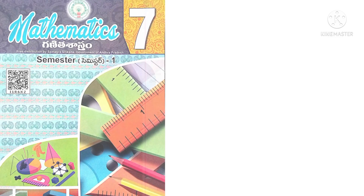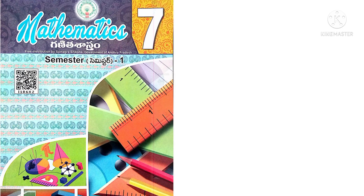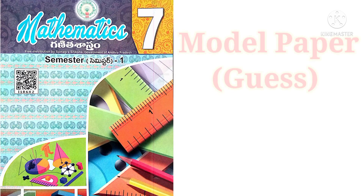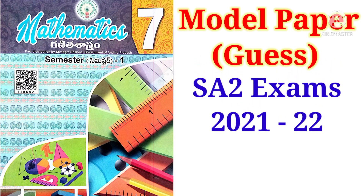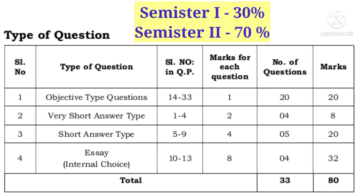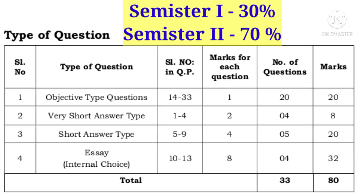Welcome to Shaker Maths. Today we are going to learn 7th class Mathematics Model Paper or Guess Paper for the forthcoming SA2 examinations for the academic year 2021-22. Before going to see the model paper, let us observe that the maximum number of questions are asked from semester 2 and minimum from semester 1, as 30% and 70% respectively.